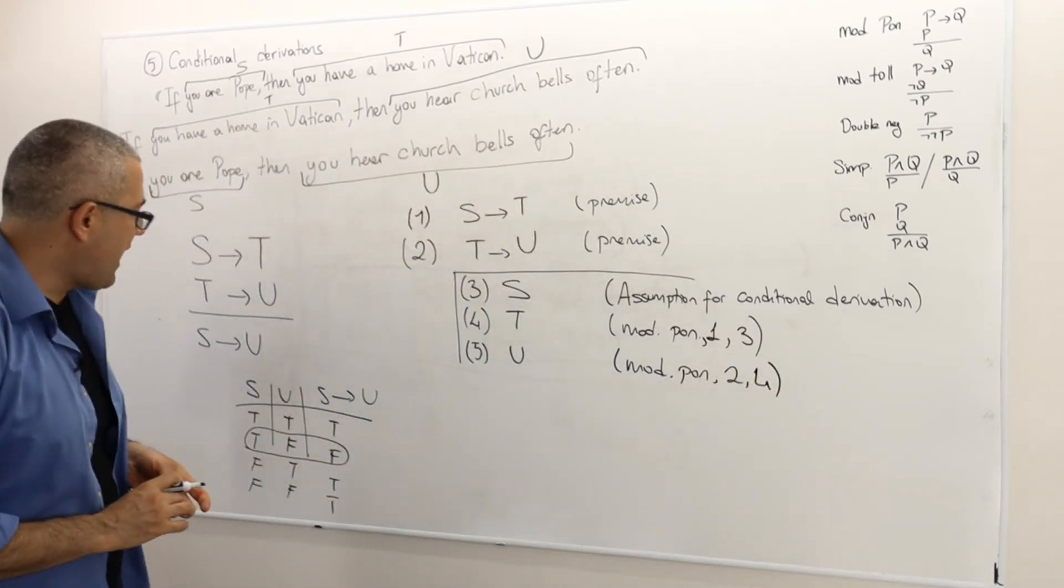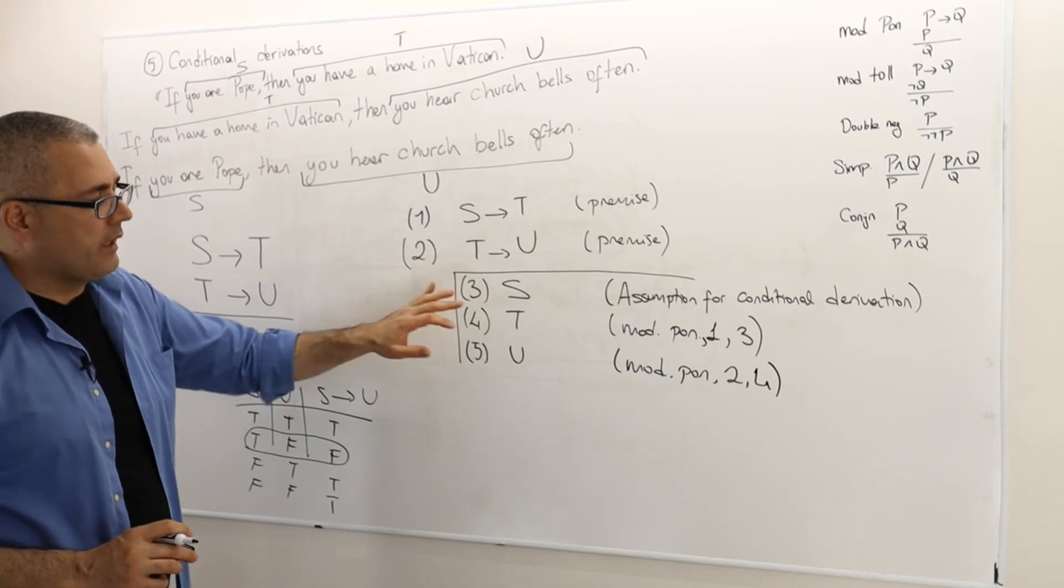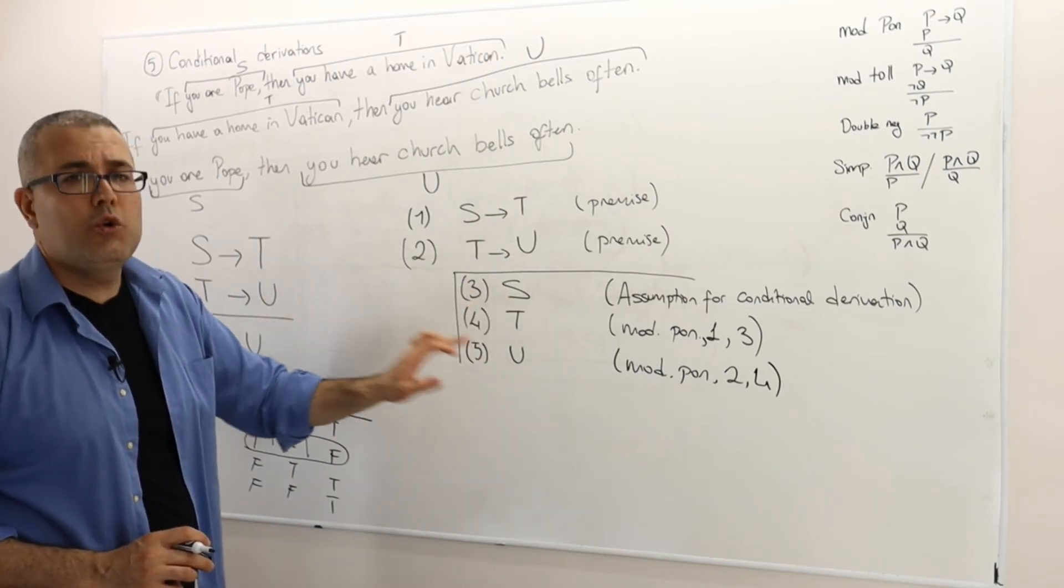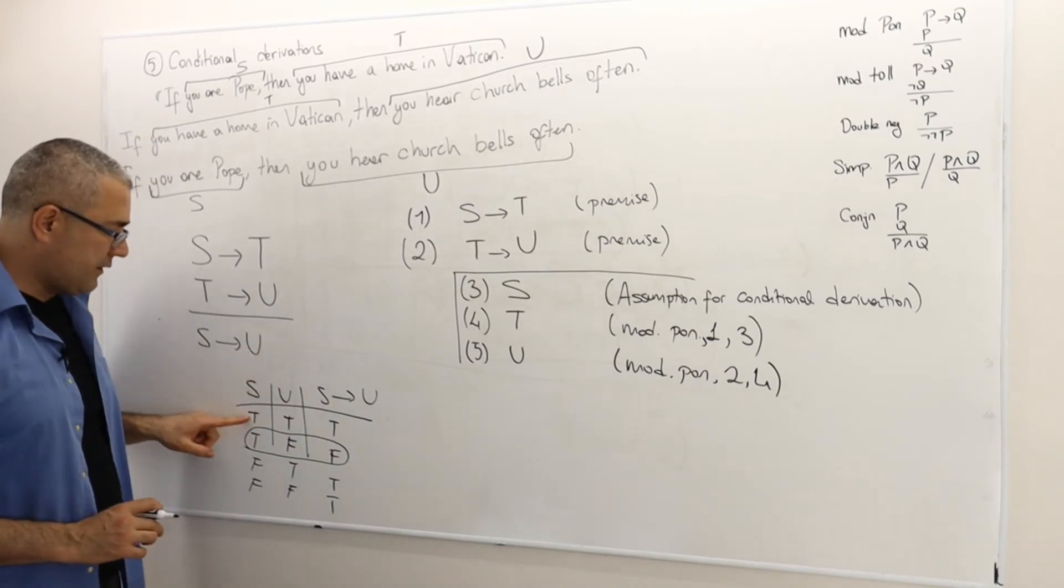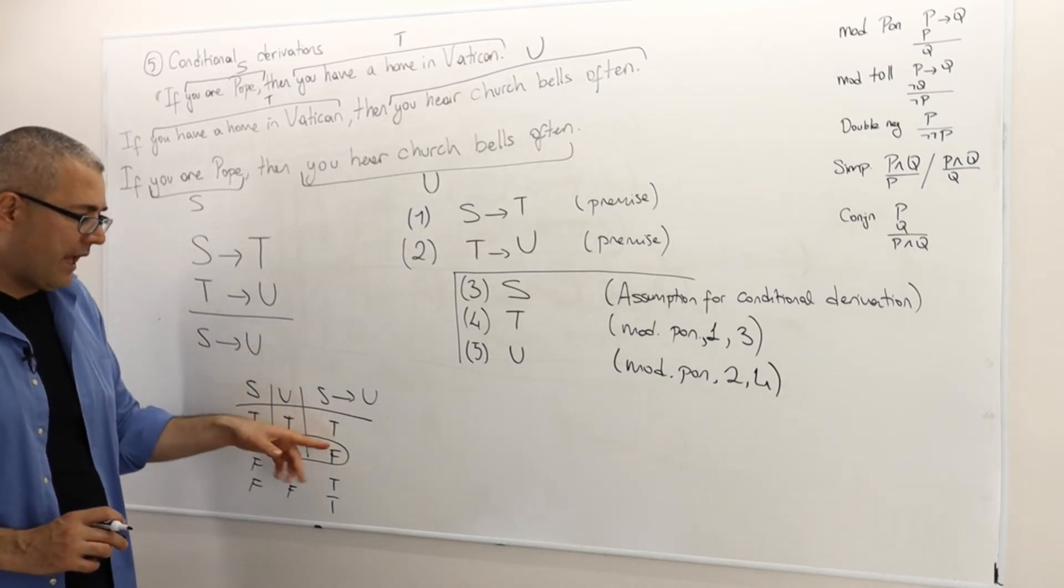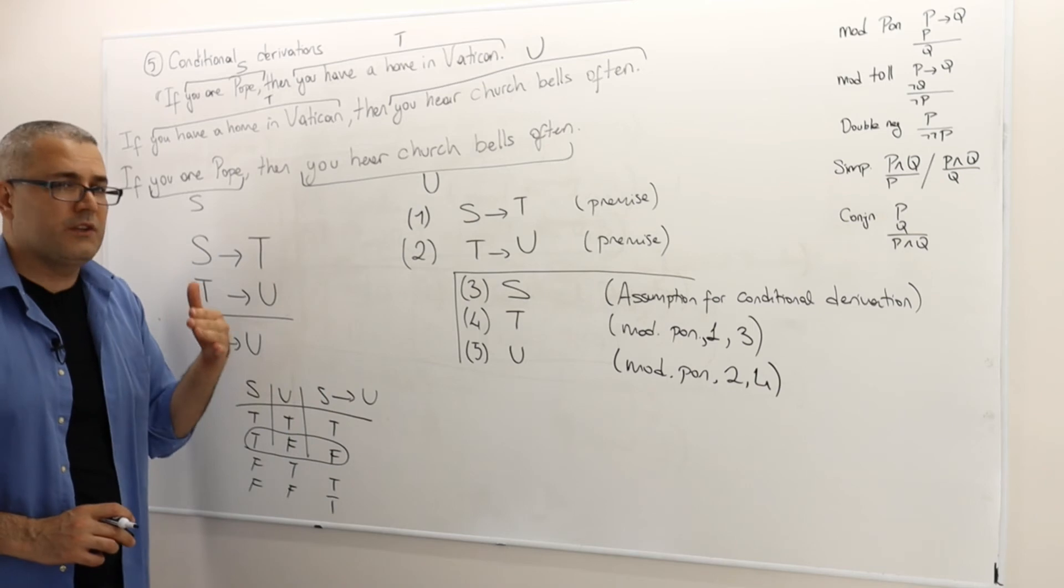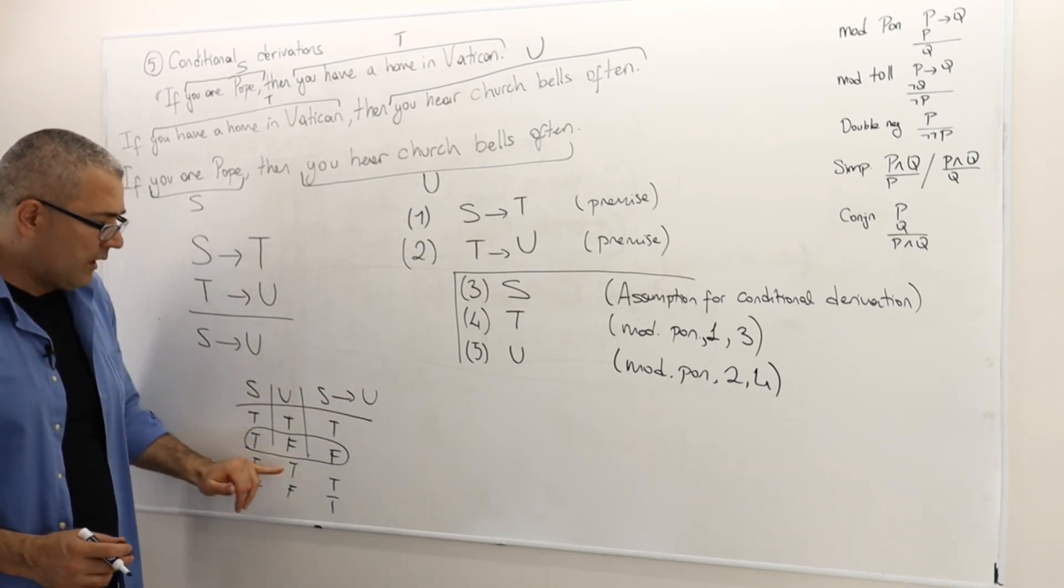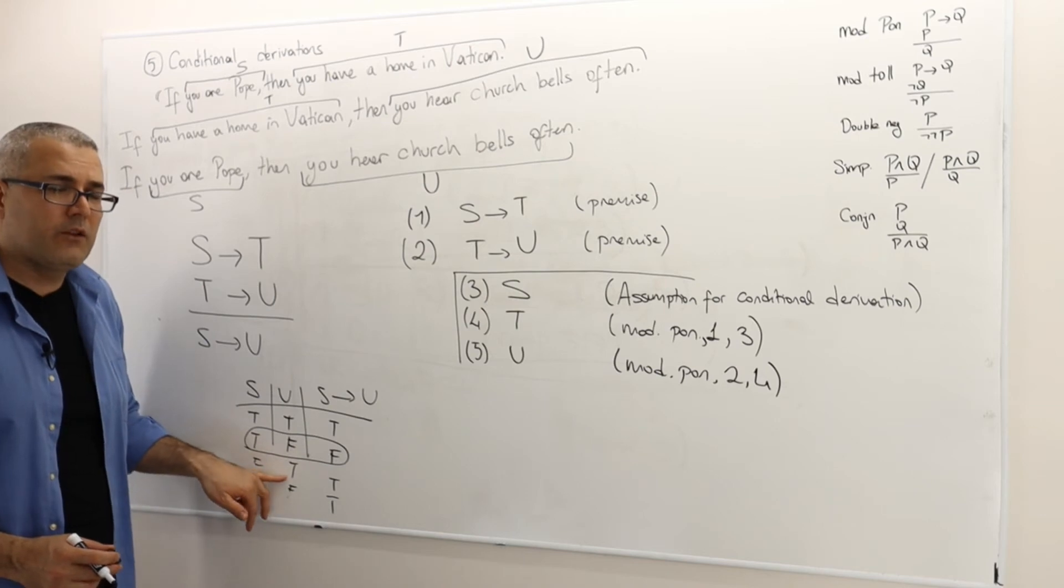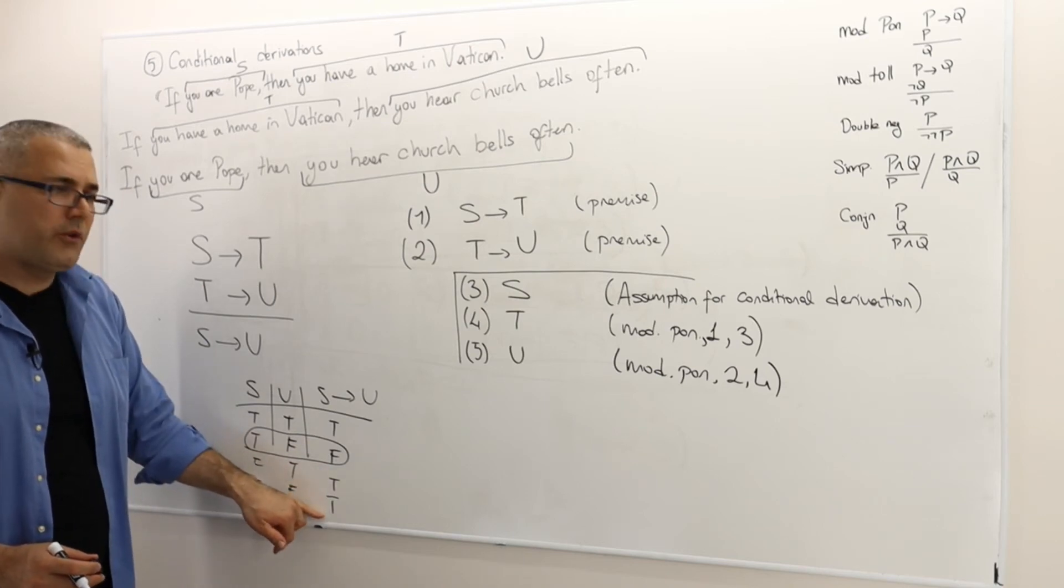Perfect. So what do I have? I have the following. If S is true, well U must be true as well. Very good. If S is true, U must be true as well and hence this S implies U is true. Remember, if S is false, I don't care about the true value of U, my statement will be true anyway.